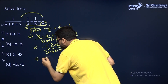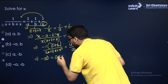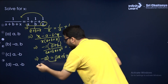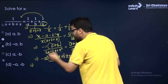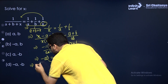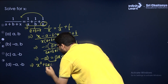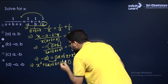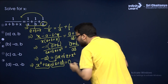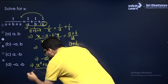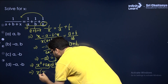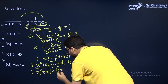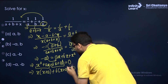So I get minus AB = AX + BX + X². Taking everything to one side in standard form: X² + AX + BX + AB = 0. We can make two groups — from the first group take X as common so (X + A) is left; from the second group take B as common so (X + A) is left again, equal to 0.